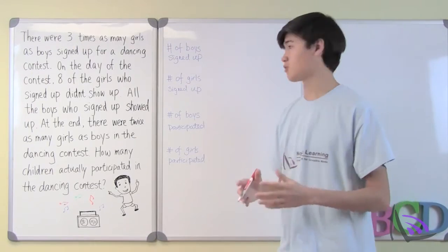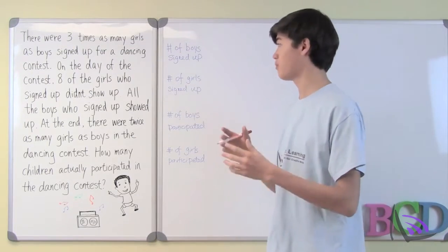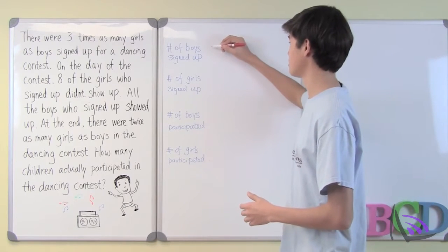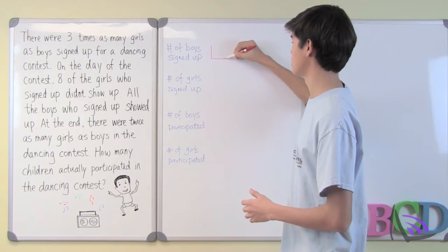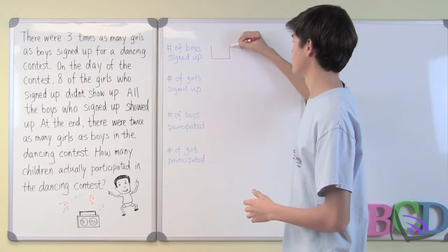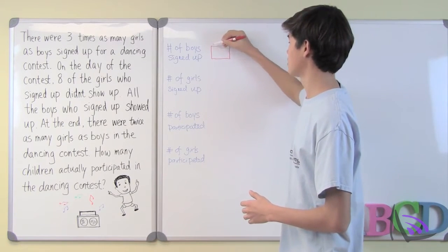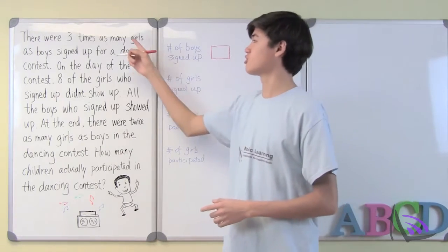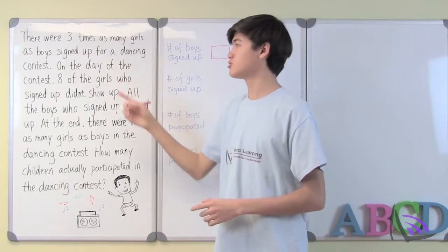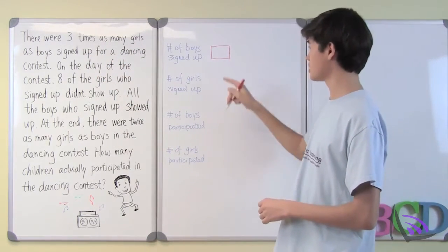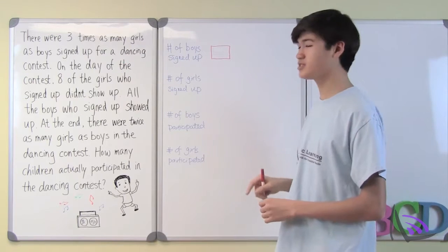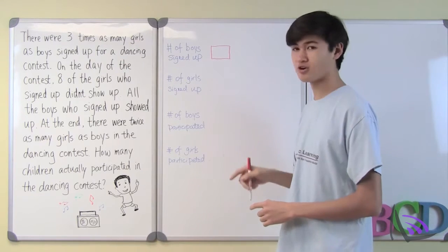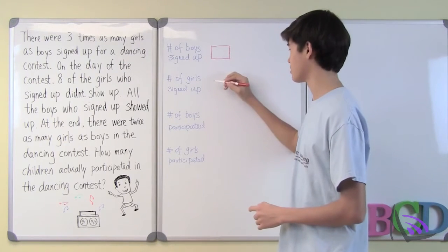First, let's draw a bar to represent the number of boys who signed up for the contest. There were three times as many girls as boys who signed up for the contest, so we can use three of these bars to represent the number of girls who signed up for the contest.